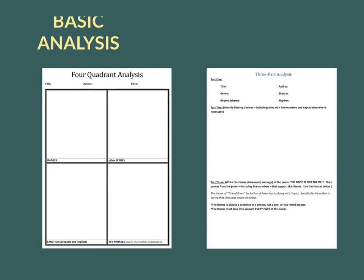Literary devices are all the strategies poets use to draw attention to key ideas, key images, and key parts of their poem. The third part of the three-part analysis is taking all of this and figuring out what the message of the poem is. It's really important to note that the topic of the poem is not the theme. The message isn't what the poem's about — the message is what we are supposed to learn from it. The topic is what the poem's about.